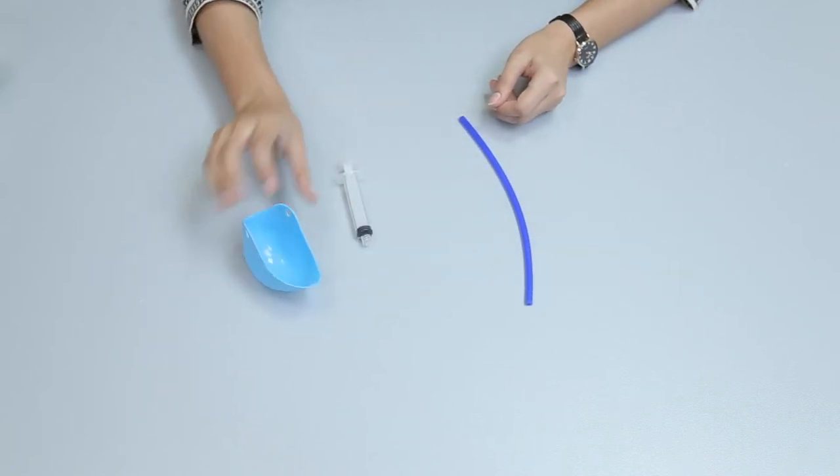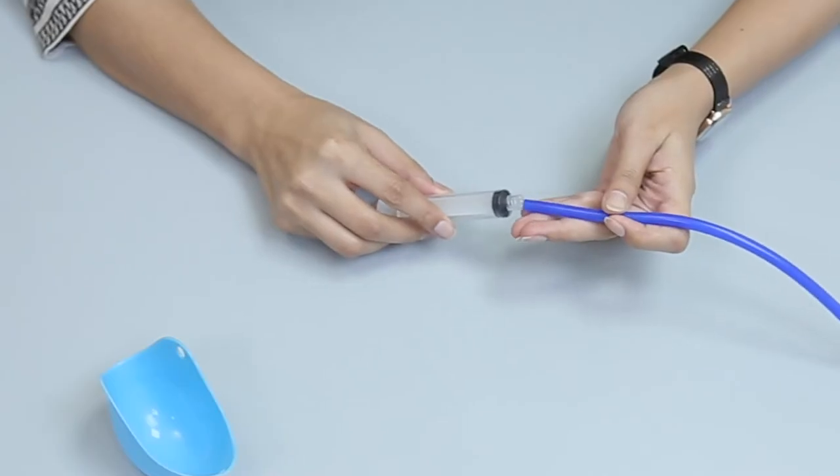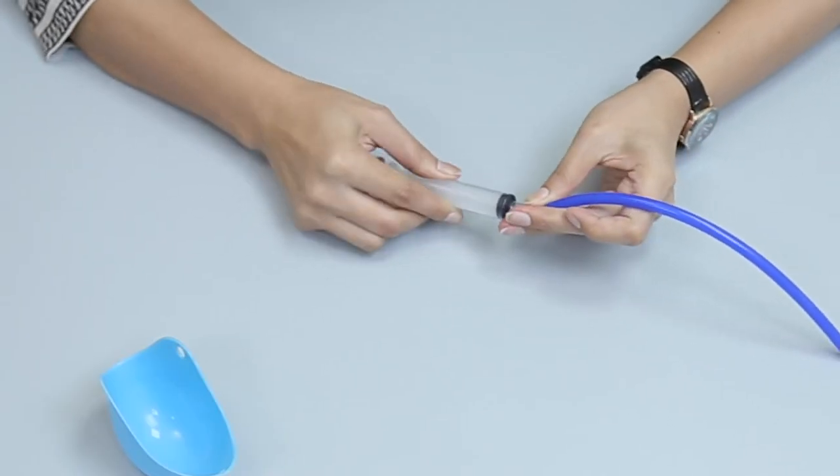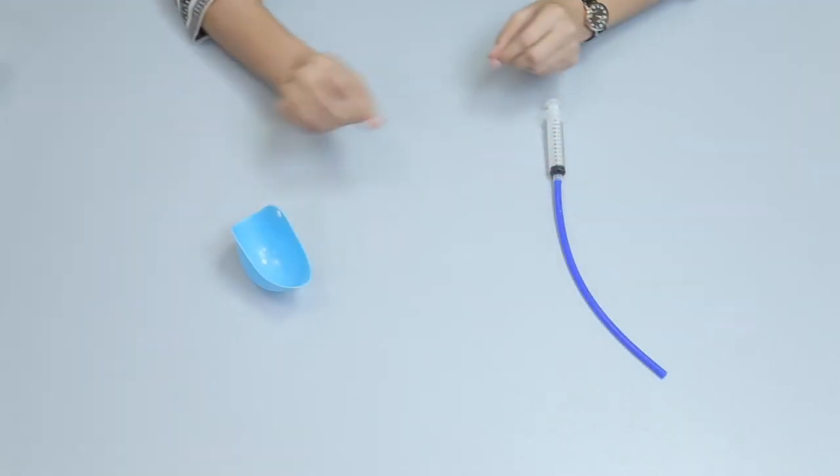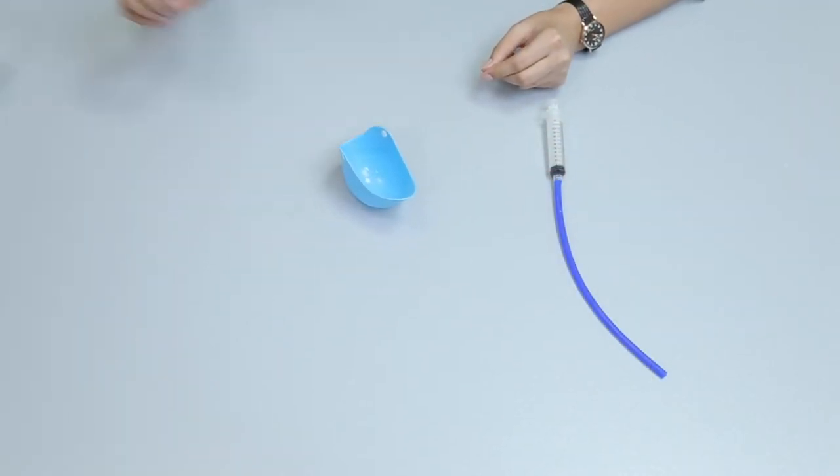We will attach the tip to the syringe. Now half fill the silicon egg poaching cup with water.